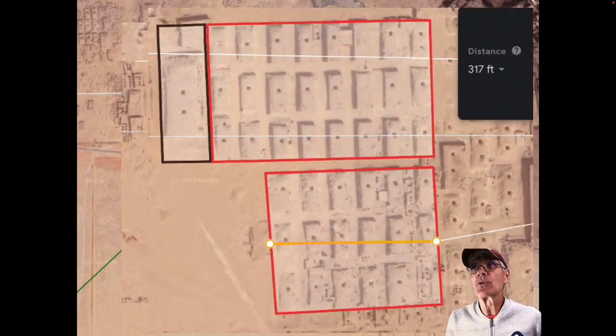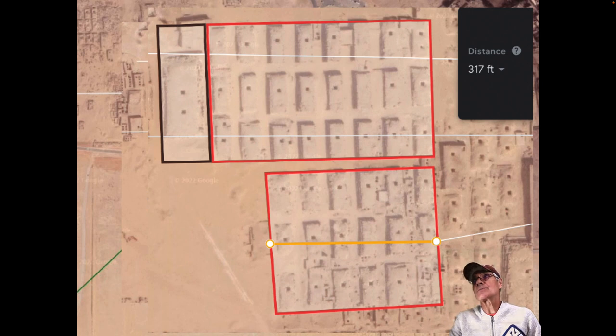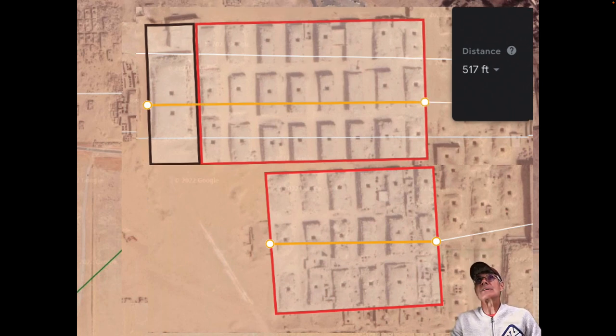Just to show you the Google Earth measurement, if you can see the yellow line there, it shows it's 317 feet across that lower group of tombs, and you can see it's 517 feet. That's the Google Earth shot across the upper.